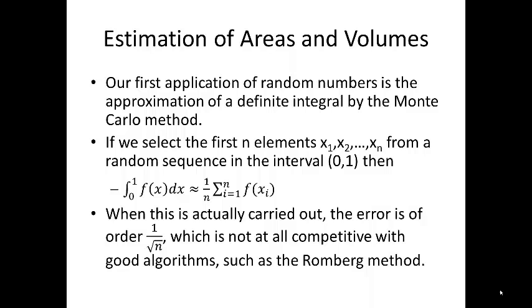If we select the first n elements x₁, x₂, all the way to xₙ from a random sequence in the interval (0,1), then the integral from 0 to 1 of f(x)dx is approximately 1/n times the sum of f evaluated at the individual points xᵢ. Here the integral is approximated by the average of those n numbers, f(x₁) through f(xₙ).